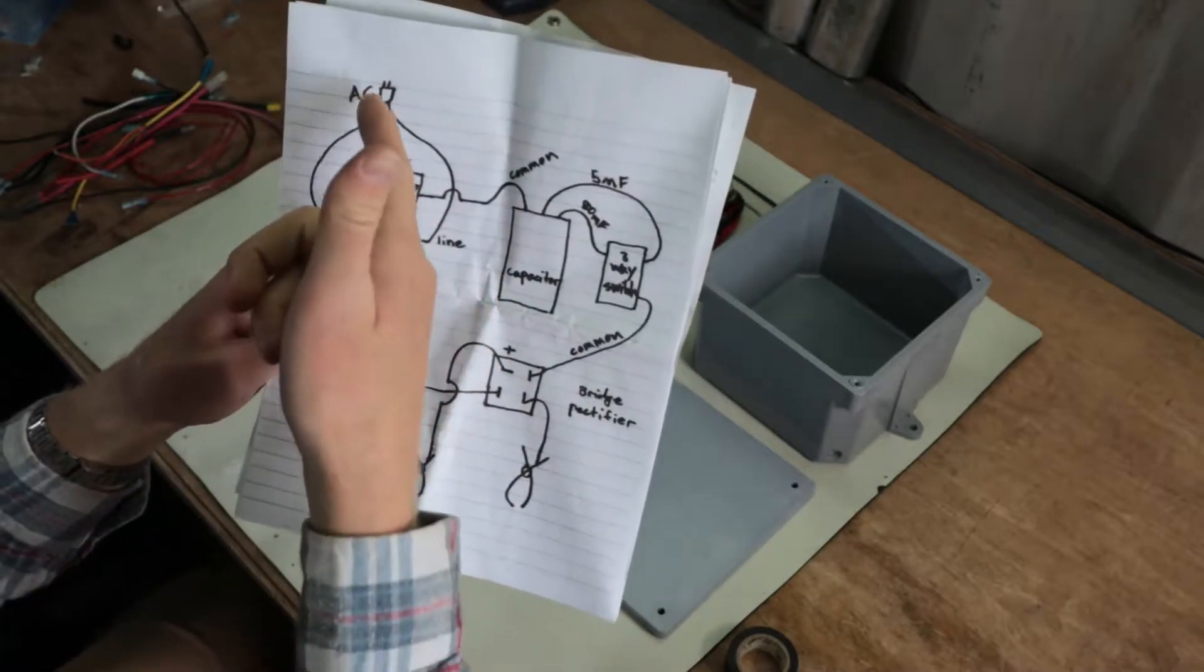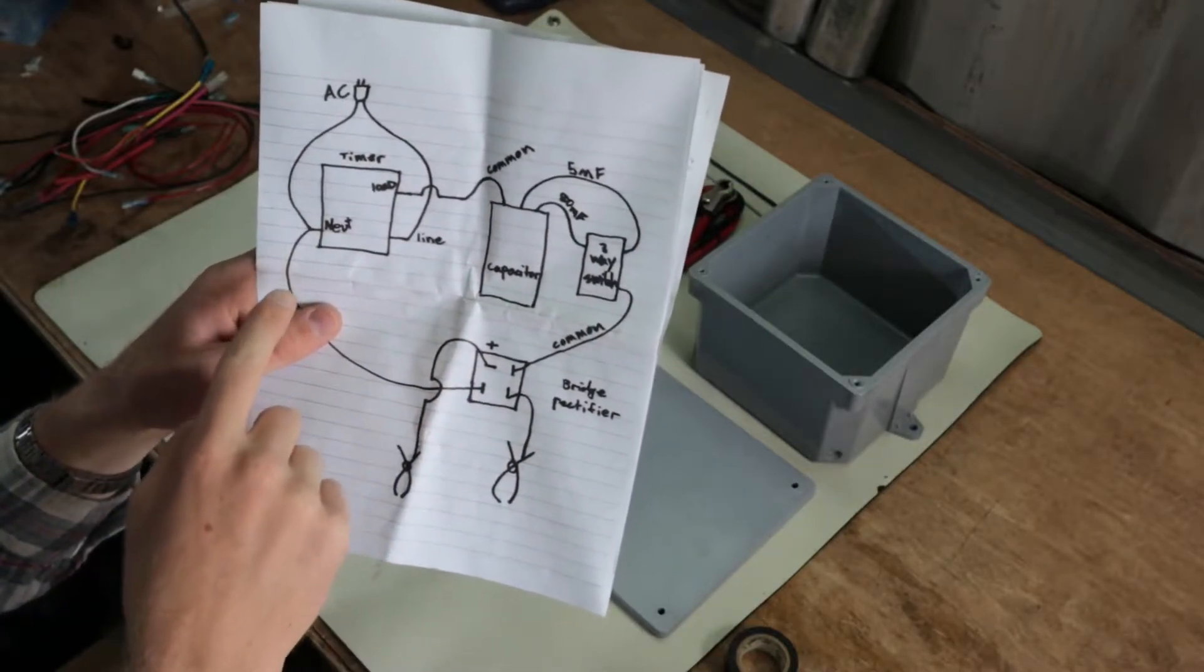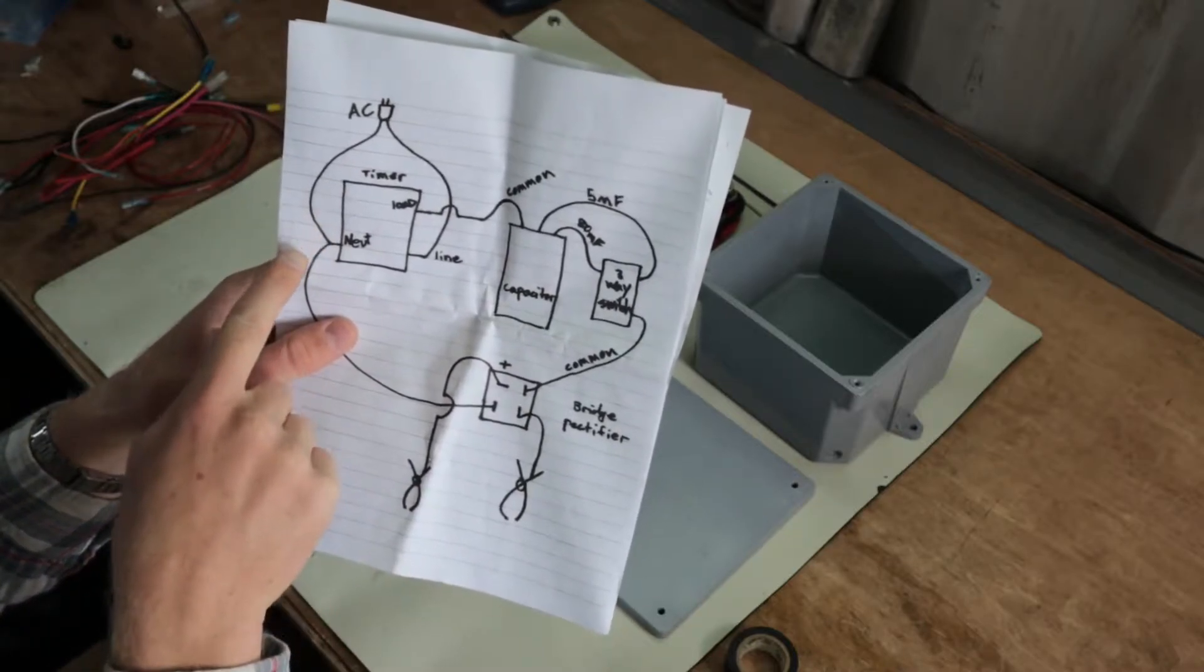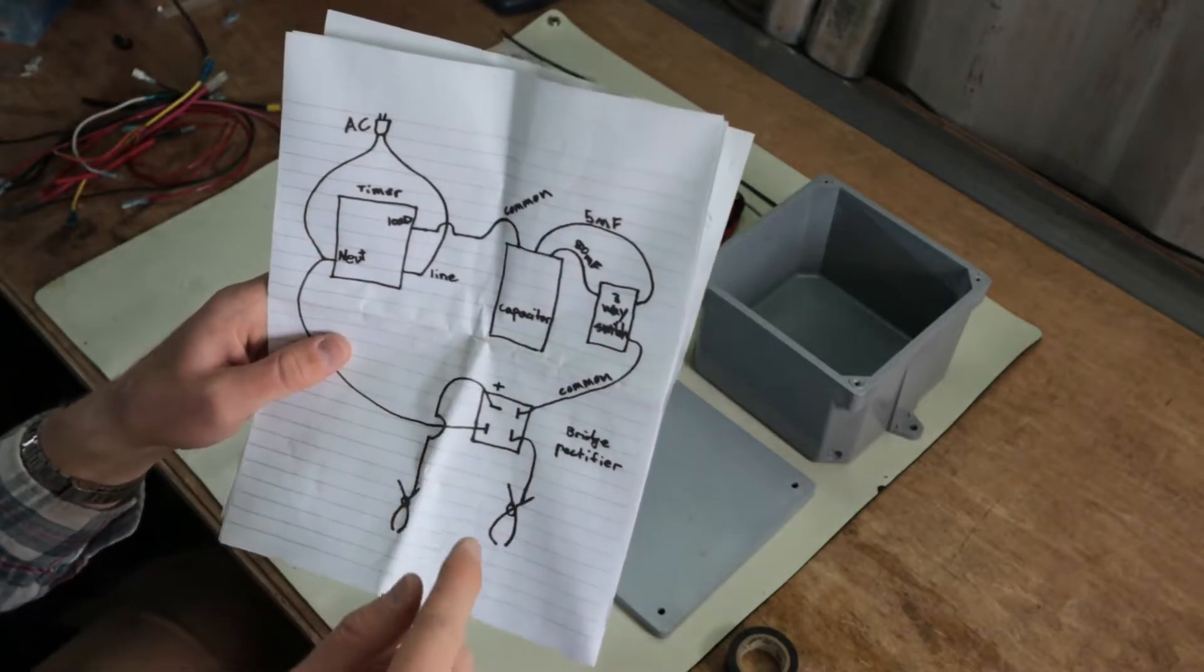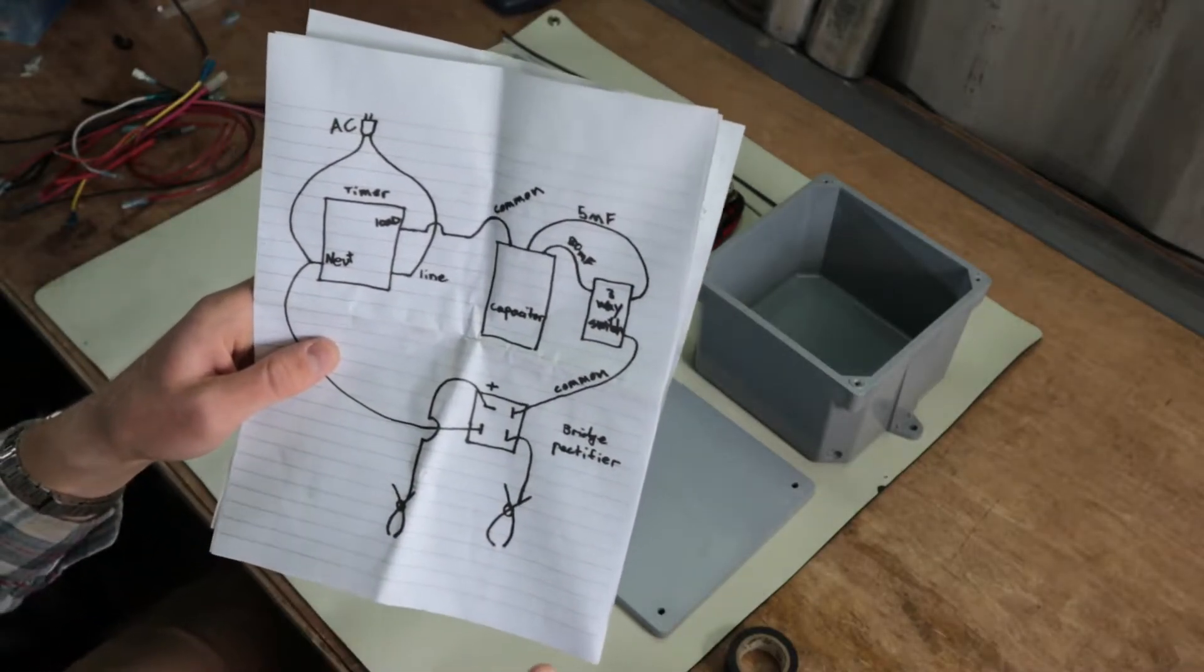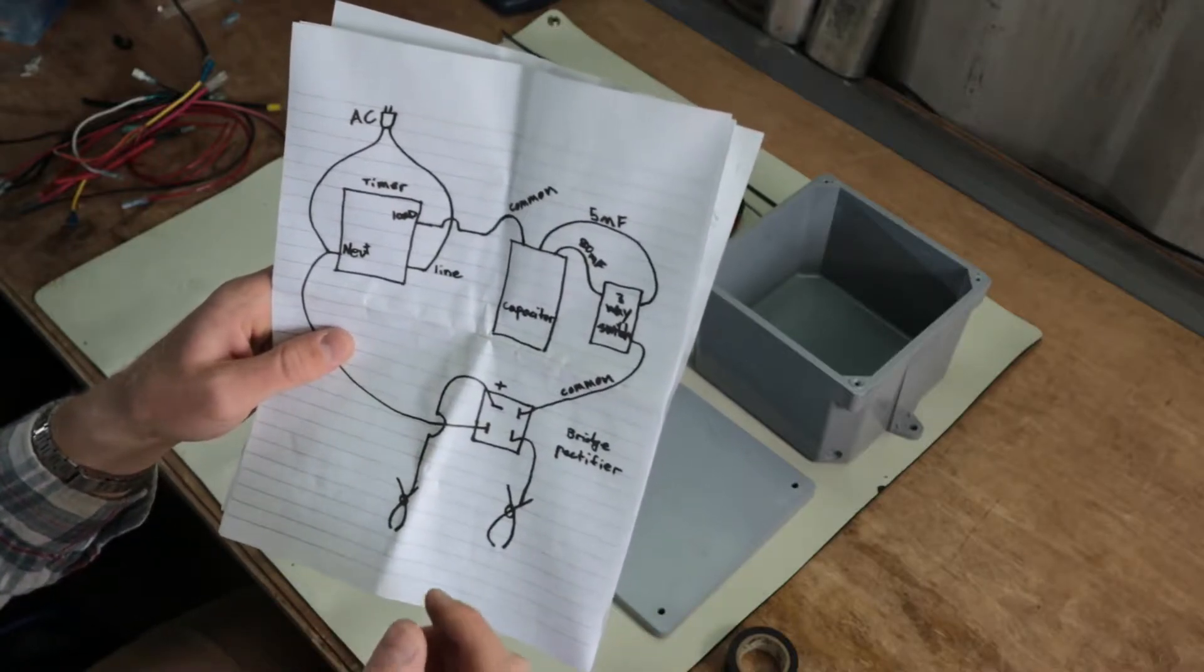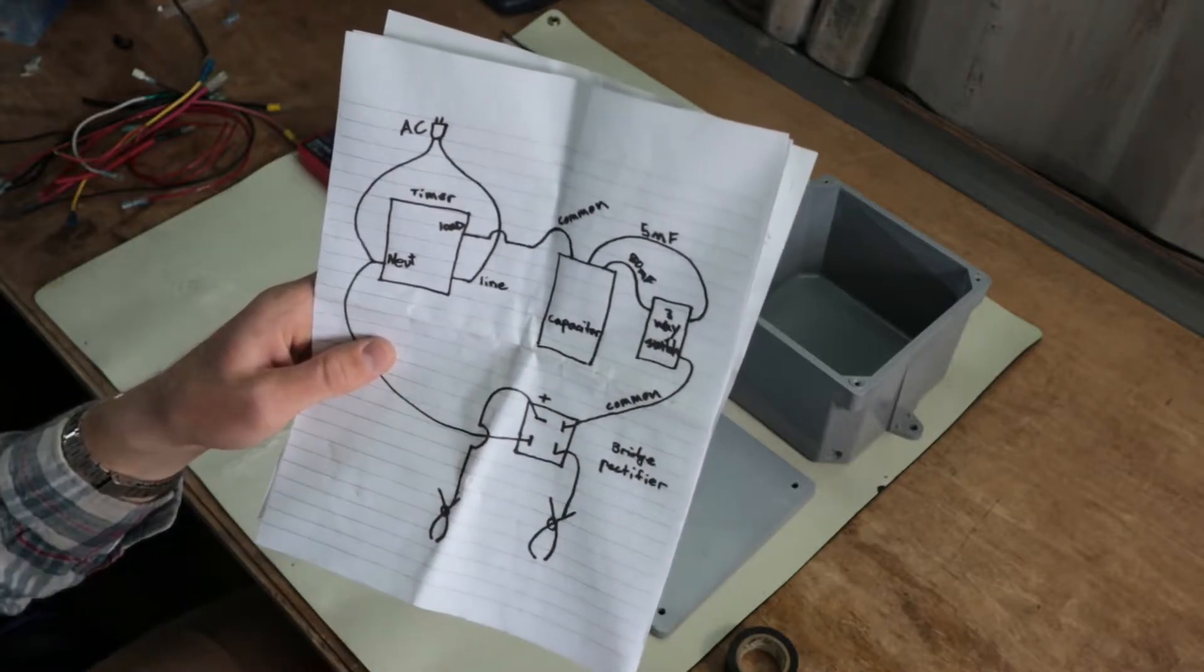So you can see here, we start with the AC in, now it's going to go directly into our timer. Now as long as our timer is on, it's going to provide power through the bridge rectifier into the capacitor. And what that's going to do is fill that capacitor up. Once that capacitor gets full, it's going to discharge back through the bridge rectifier into the battery.